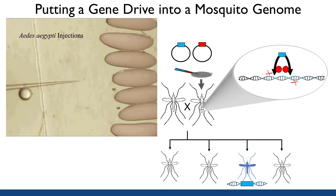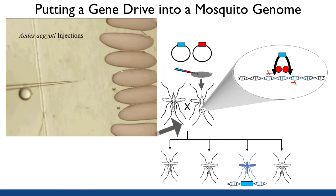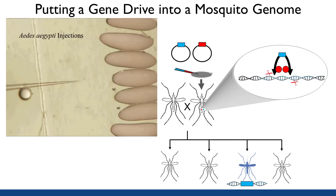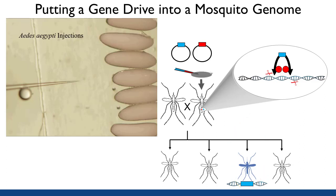As the injected embryo develops, hopefully, some — but definitely not all — of the cells in the embryo will acquire the transgene and have it integrated into a chromosome. If the cell will go on to produce sperm or eggs, that is germ cells, in the resulting adult, the transgene will be transmitted to its progeny following mating. The resulting progeny will be fully transgenic, with all cells of the insect containing the transgene or gene drive.